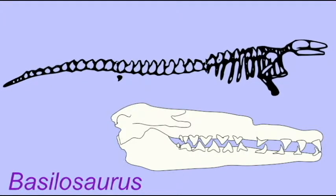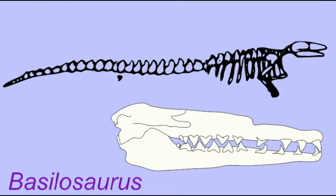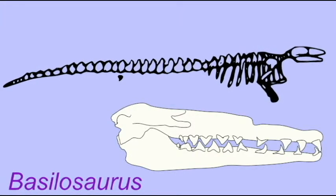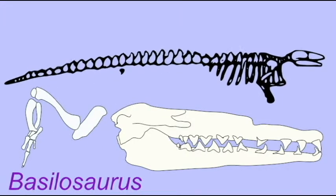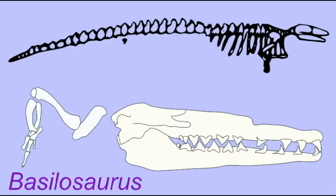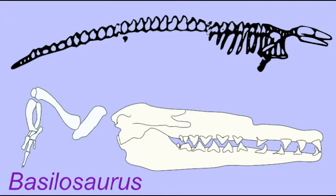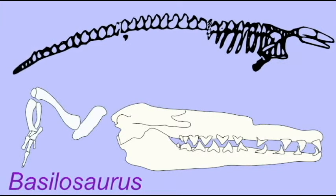There were two tiny limbs, only two feet long, attached to the hips. These would have been useless in the locomotion of an animal which measured more than 20 meters. It is possible that they served in other functions, perhaps during copulation.